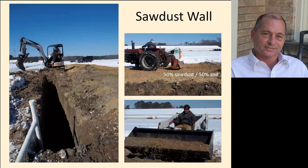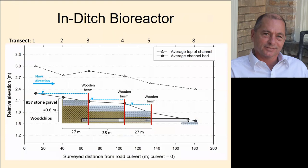Another innovative design Laura came up with is to dig a trench parallel to an ag drainage ditch and mix a 50% sawdust / 50% soil mixture, then backfill it into the trench. The hydrology in these very flat landscapes is that a lot of water moving to the ditch comes from the field as shallow underground groundwater flow. That water experiences denitrification as it passes through the sawdust wall and moves into the ditch, and we have found we are getting some denitrification with the sawdust wall.